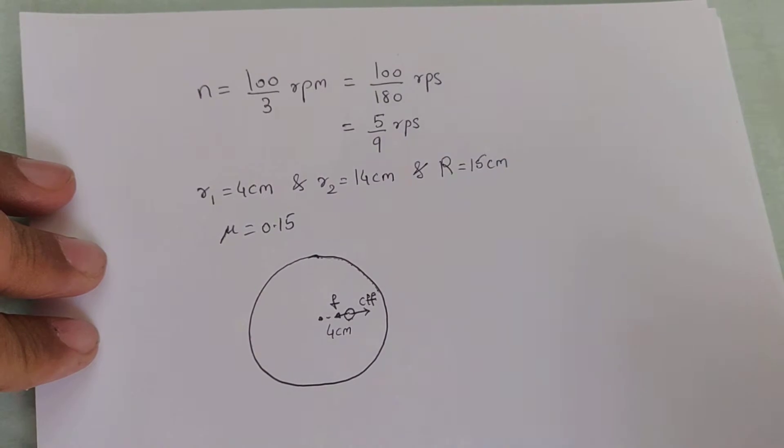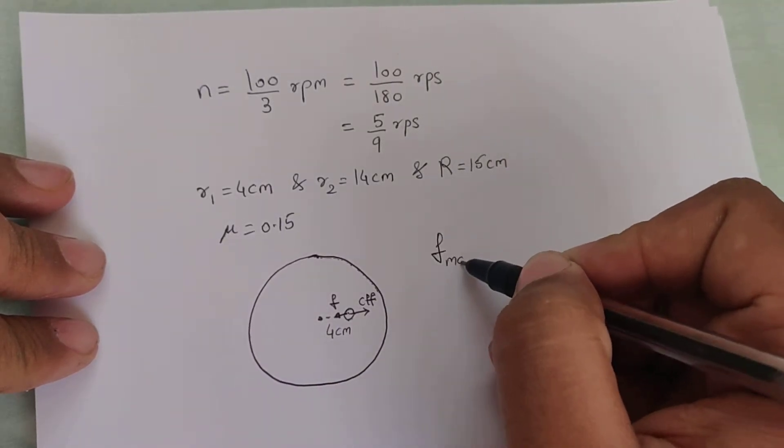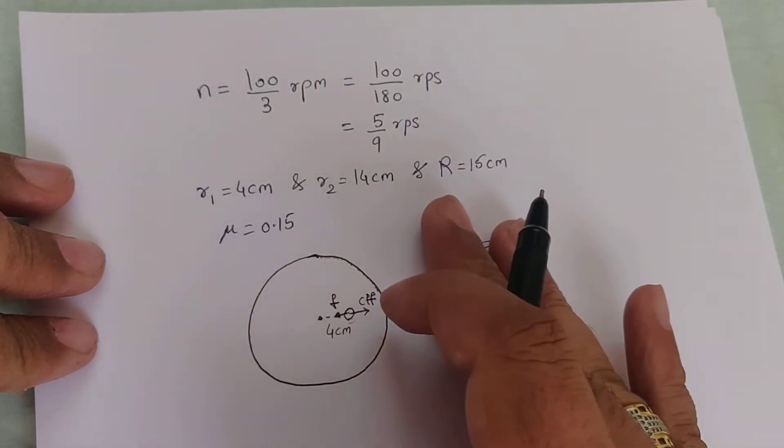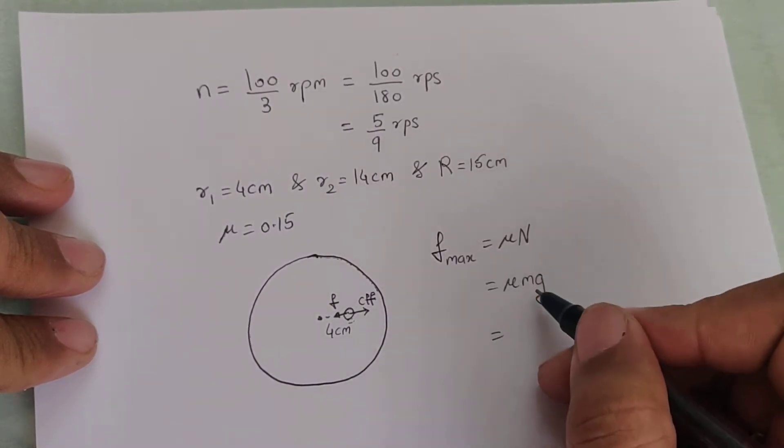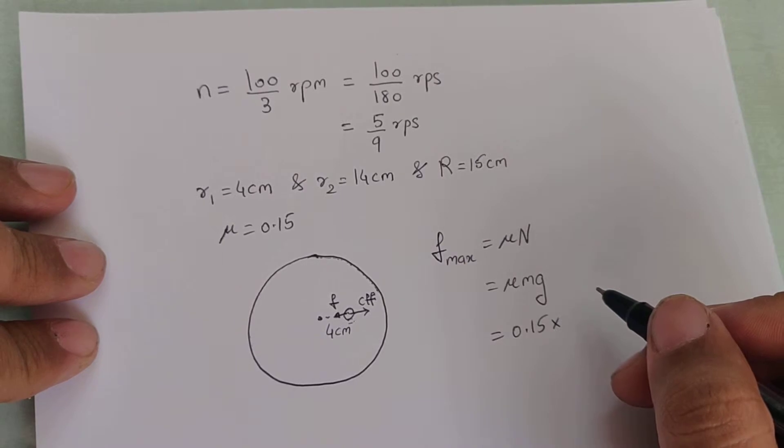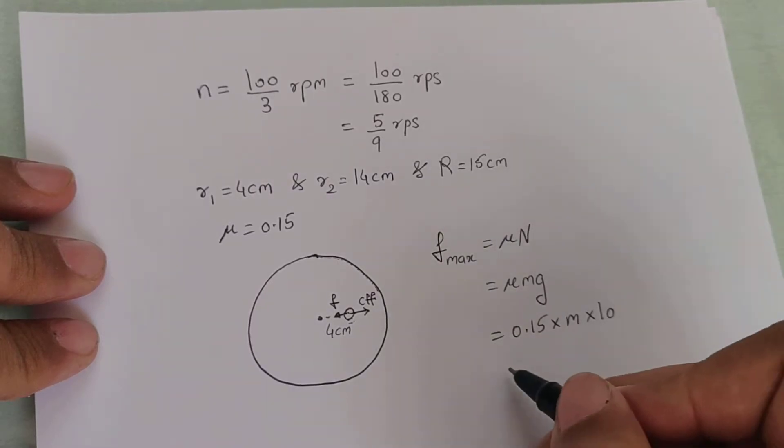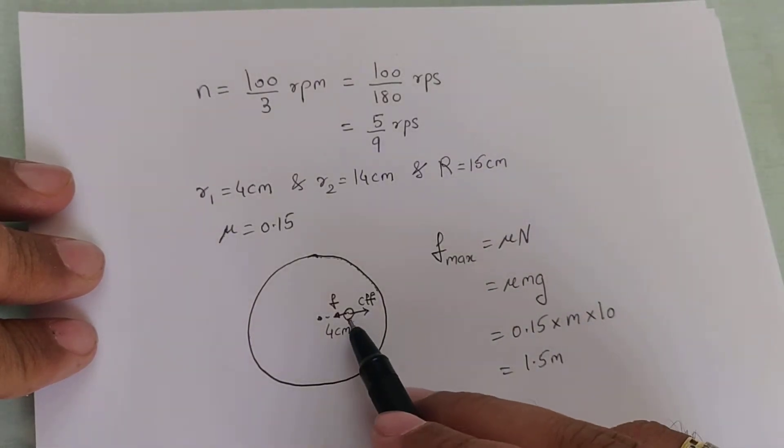First we need to find out what is the maximum friction force possible in the case of coins. So I can say f max is going to be mu n. Since the coin is placed on a horizontal plane surface, I can say the normal reaction is balanced by the weight. So I will substitute n as mg. Mu they have given as 0.15, mass we can assume to be not given, and g as 10. So I will get the value as 1.5m is the maximum friction force a coin can experience due to its weight.